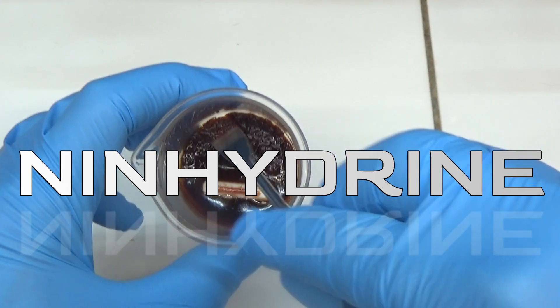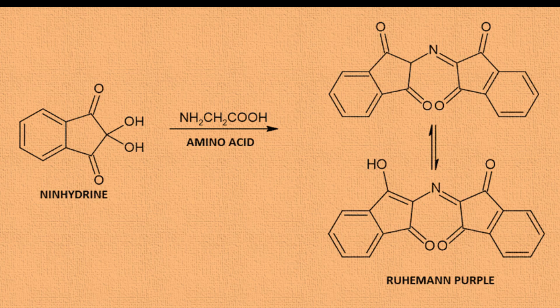In this video, we are going to obtain ninhydrin. Ninhydrin is a reagent used to determine alpha amino acids and reacts with them at pH levels between 4 and 8.